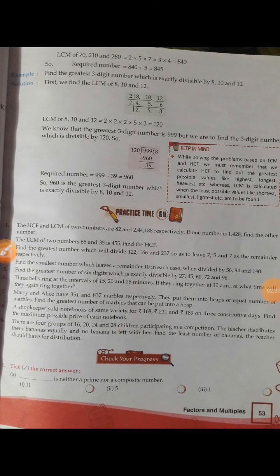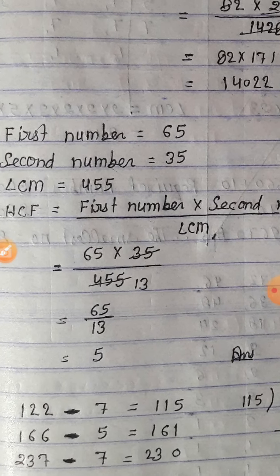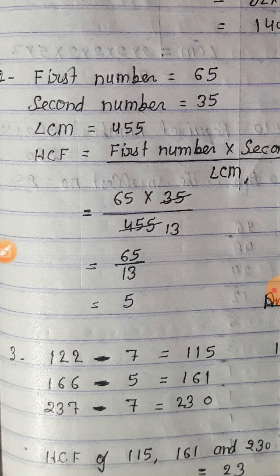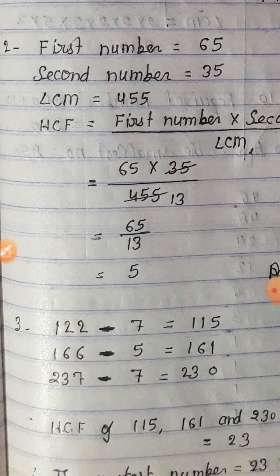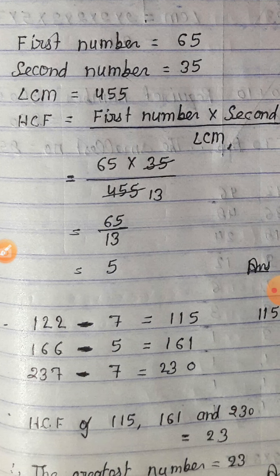Question number 2: The LCM of two numbers 65 and 35 is 455. Find the HCF. HCF find करने के लिए formula use करेंगे: HCF = (first number × second number) ÷ LCM. यहाँ first number = 65, second number = 35, LCM = 455.